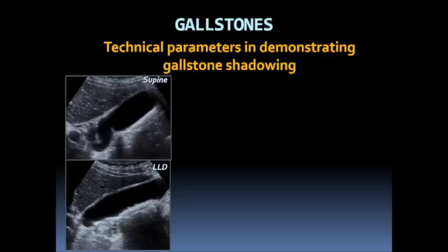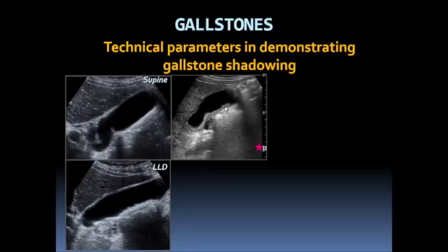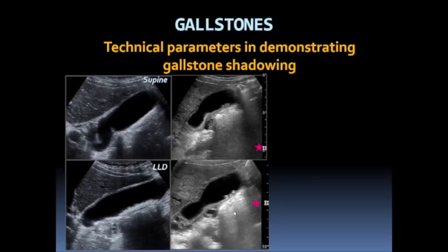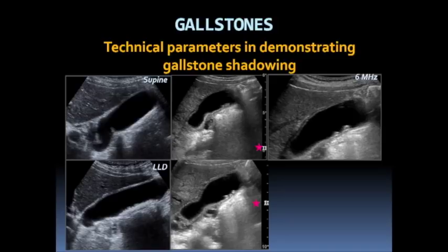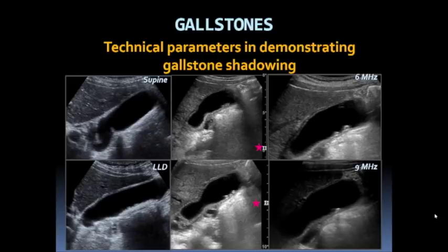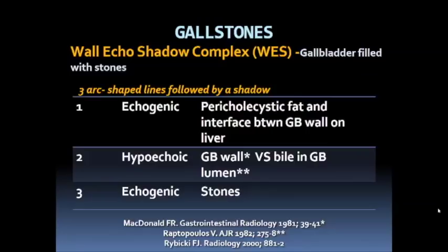A different patient with luminal echogenic contents: when the focal zone is intentionally set away from the gallbladder, there's no clear shadowing. When the focal zone is optimized, we begin to see vague posterior acoustic shadowing indicating a stone. Scanning with a six megahertz transducer shows vague shadowing; with a nine megahertz transducer, posterior acoustic shadowing is clearly demonstrated.